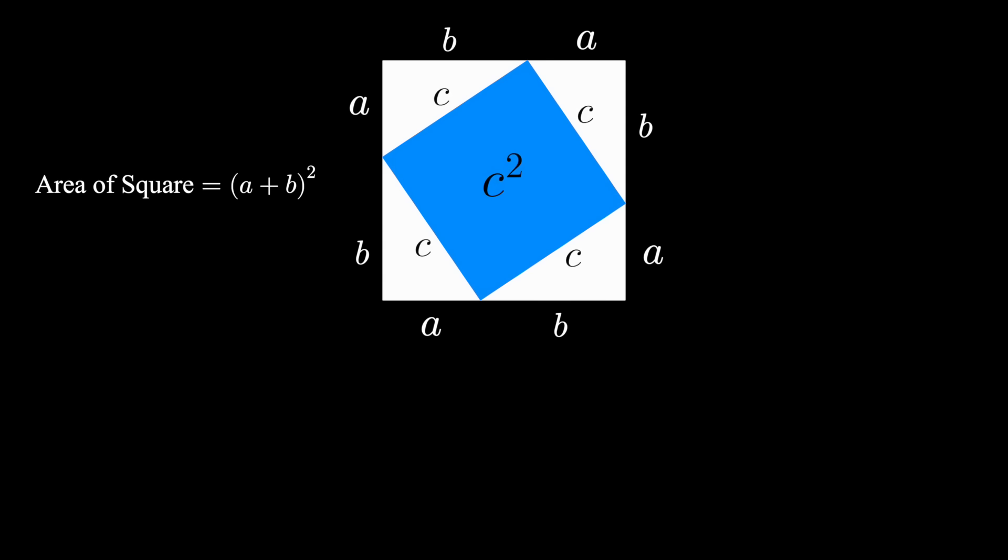Also notice the area of this square is the area of the inner square, c squared, plus the area of the four triangles, all of which have area one-half base times height. Both of these quantities represent the area of the square, so they must be equal.